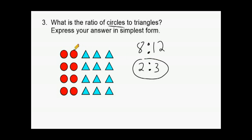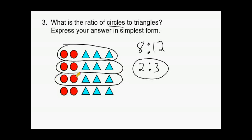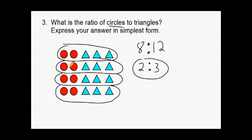If you take a look here, we could divide this picture into four equal groups. Notice inside each group, we have a total of two circles and three triangles. When we reduce this ratio by a factor of four, the greatest common factor also tells you how many equal groups you can divide your total into. And as you can see, we have four groups, each with two circles and three triangles.